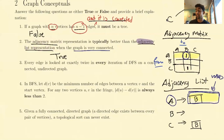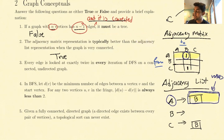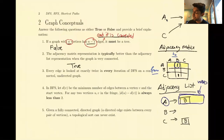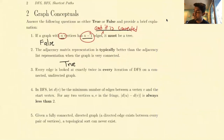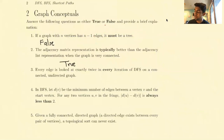On the flip side, the adjacency list representation is typically better when the graph isn't that connected. The next question asks: every edge is looked at exactly twice in every iteration of DFS on a connected undirected graph.